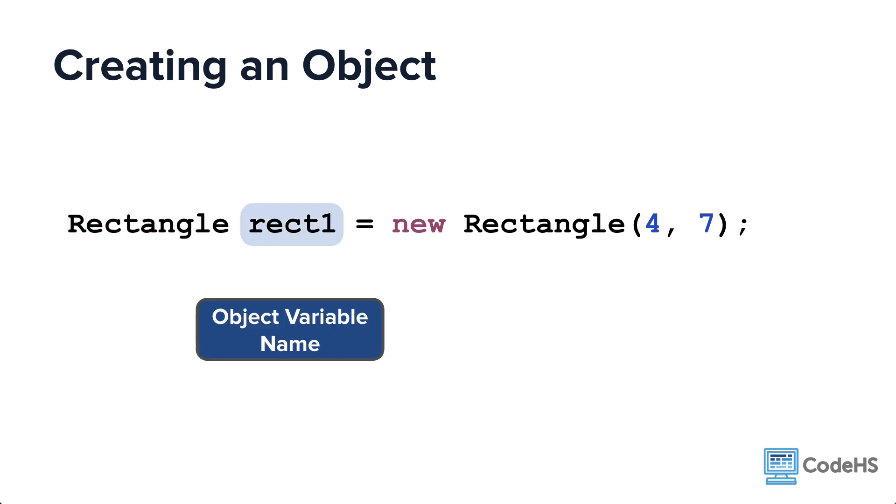Rect1 is the object variable name. Whenever you refer to this object in the future, you will use the name that you've assigned to it. This is the same as with primitive values.